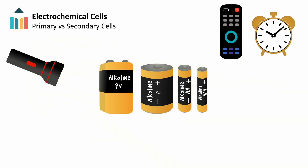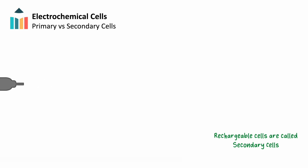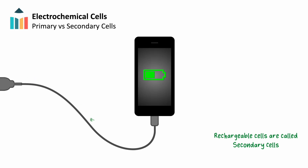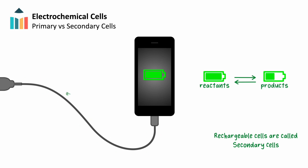Rechargeable batteries, in contrast, contain reversible reactions — we call these secondary cells. A secondary cell is a cell in which electrical current from an external power source, such as a wall socket, can be supplied to drive the reverse redox reaction, recharging the cell and increasing its voltage again. When a secondary cell or battery is recharged, the supplied current flows opposite to the current when the cell is being discharged.